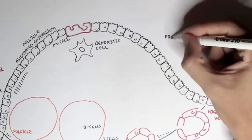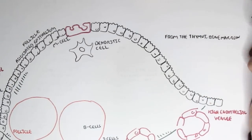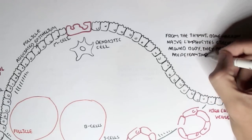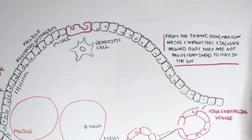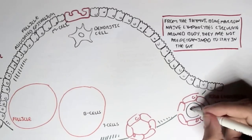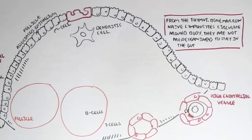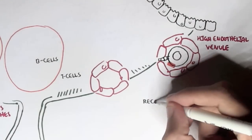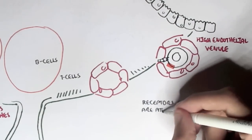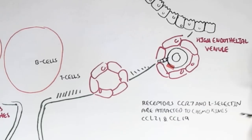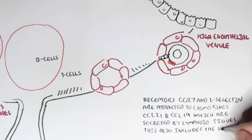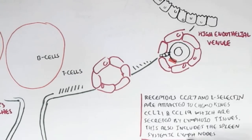The question is where do these immune cells come from, particularly these naive lymphocytes? Well, they come from the high endothelial venules, from the bloodstream. From the thymus and bone marrow, the naive lymphocytes circulate around the body and they are not predetermined to go to the gut — they can go anywhere depending on where the signal takes them. All lymphoid tissues secrete chemokines which attract the lymphocytes. The receptors CCR7 and L-selectin of the lymphocytes are attracted to chemokines CCL21 and CCL19, which are secreted by lymphoid tissues including the Peyer's patches, but also by other lymphoid tissues such as the spleen and lymph nodes.